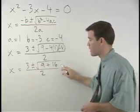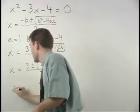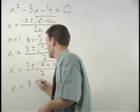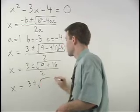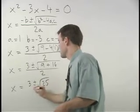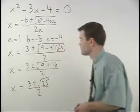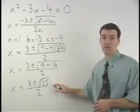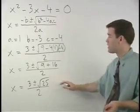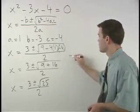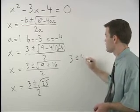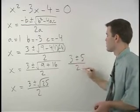Simplifying further inside the radical, we have x equals 3 plus or minus the square root of 25 over 2. And root 25 is just 5, so we have 3 plus or minus 5 over 2.